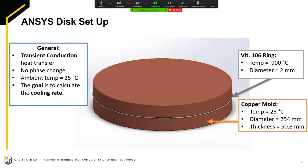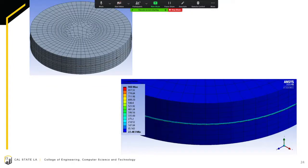This is our ANSYS disk setup, similarly to the plate setup. This design was created to be similar to the design team's SolidWorks assembly, and it was also kept simple by making it a transient conduction heat transfer with no phase changes, with the same goal to calculate the cooling rate. The parameters of the ring and mold are here as shown. On the left is the mesh settings applied to the simulation, and on the right is the Vitreloy 106 ring cooling down over time. It is also a looped video.